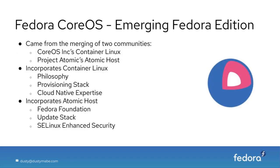Fedora CoreOS — what is it? It's an emerging Fedora edition. It came from the merging of two communities: CoreOS Inc.'s Container Linux community and Project Atomic's Atomic Host community. It incorporates the Container Linux philosophy, the provisioning stack, and the cloud-native expertise of Container Linux. It also incorporates Atomic Host's Fedora foundation, the update stack, and enhanced security with SELinux.